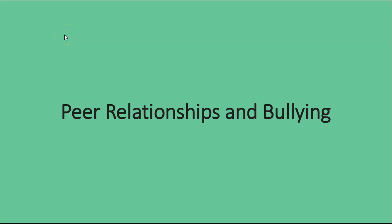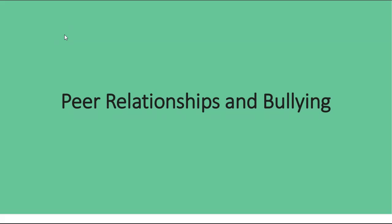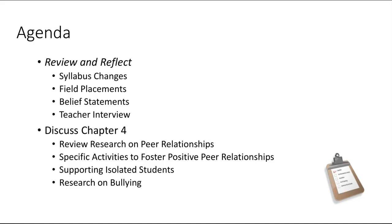We're taking a look at chapter 4 of our text, thinking more about classroom management and the learning environments that we have, the ways that we support and scaffold learners. We're specifically wrapping and peeling away some of the layers that impact peer relationships and then bullying in our classroom. Looking at where we've been and where we're going: research on peer relationships, fostering positive peer relationships, identifying and supporting isolated students, and research on bullying.